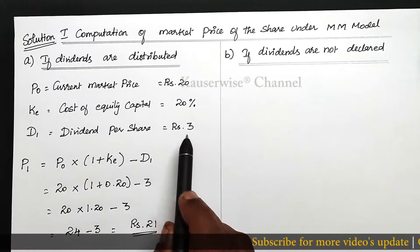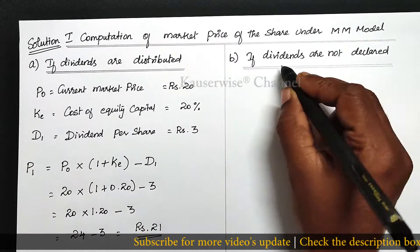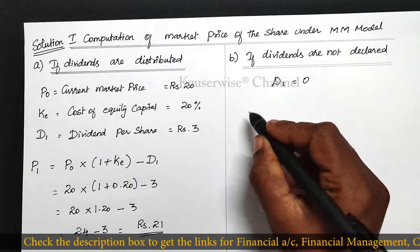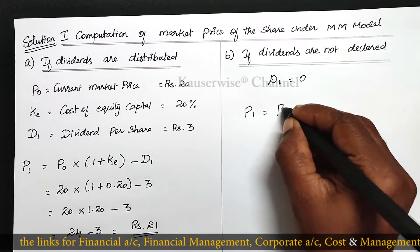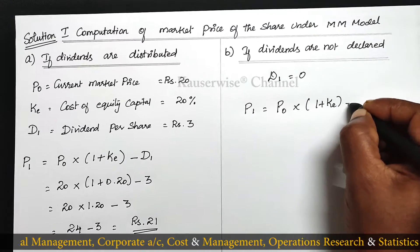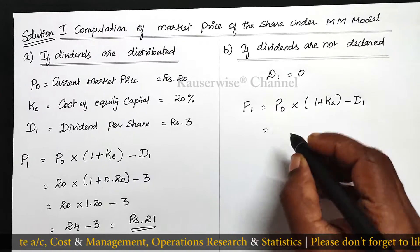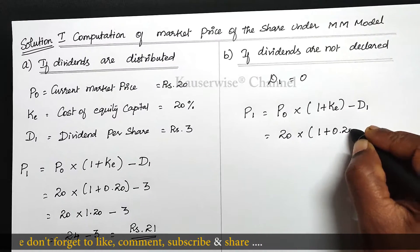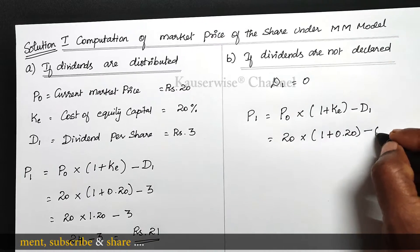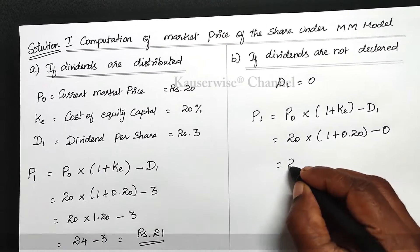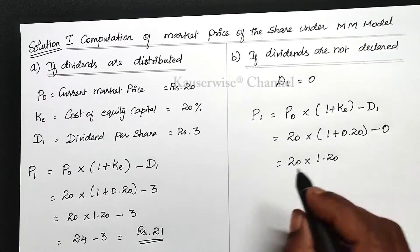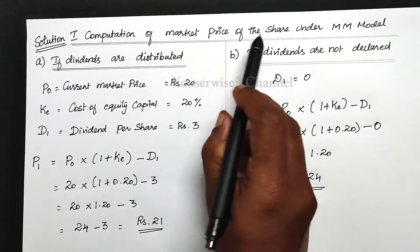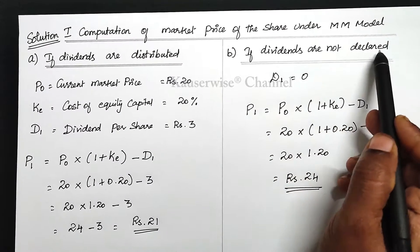Now we calculate if dividends are not declared. In this case D1 is 0, so instead of 3 we take 0. All other values remain the same. Substituting: P1 = 20 into 1 plus 0.20 minus 0. So 20 into 1.20 equals 24, minus 0 gives rupees 24. This is the market price per share at the end of the year if dividends are not declared.